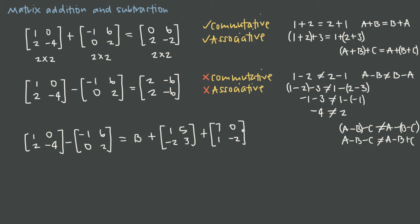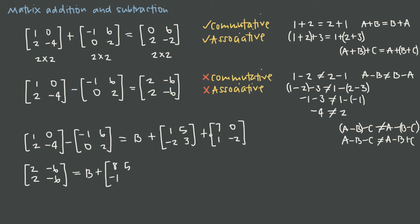So we can start on the left-hand side and do that subtraction: 1 minus negative 1 is 2, 0 minus 6 is negative 6, 2 minus 0 is 2, and negative 4 minus 2 is negative 6. Then on the right we have B plus the sum of the two matrices: 1 plus 7 is 8, 5 plus 0 is 5, negative 2 plus 1 is negative 1, and 3 plus negative 2 is positive 1.